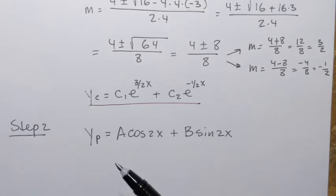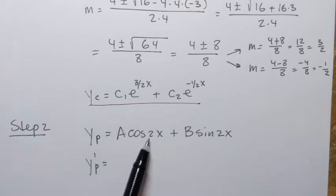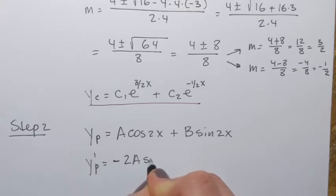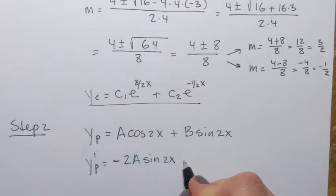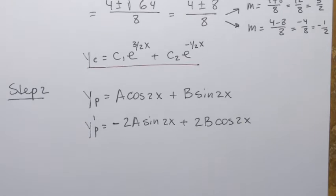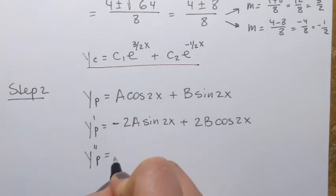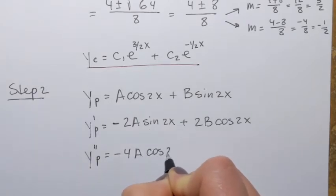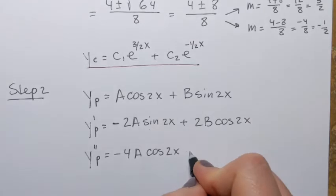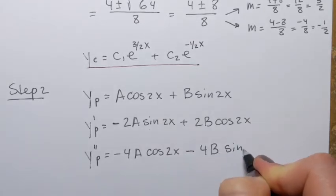To find A and B, we plug that solution into our equation, so we need the first and second derivatives. The first derivative is negative 2A·sine(2x) plus 2B·cosine(2x), using the chain rule. The second derivative is negative 4A·cosine(2x) minus 4B·sine(2x), since the derivative of cosine is negative sine, again using the chain rule.